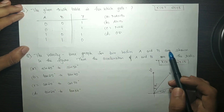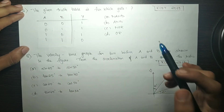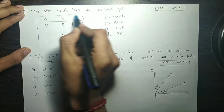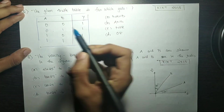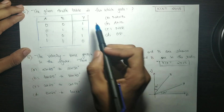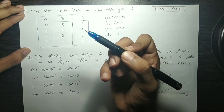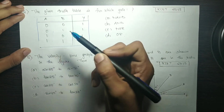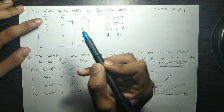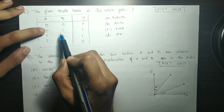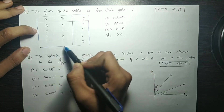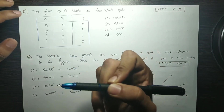This is the question: the given truth table is for which gate? The truth table has inputs A and B and output Y. The values are: A=0, B=0, Y=1; A=0, B=1, Y=1; A=1, B=0, Y=1; A=1, B=1, Y=0.